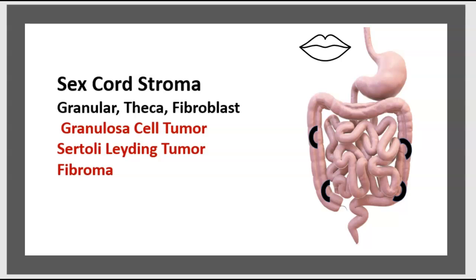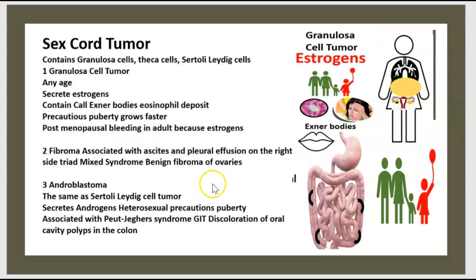The sex cord stroma classification includes: granulosa-theca cell tumors and fibroblasts, granulosa cell tumor, Sertoli-Leydig cell tumor, and fibroma. The first category is granulosa cell tumors, the second is fibroma, and the third is androblastoma.